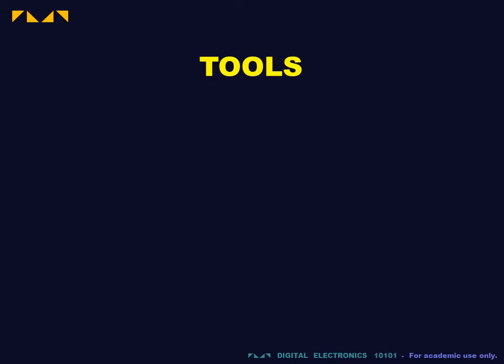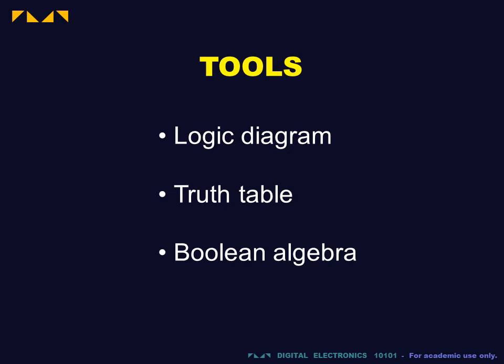There are three tools that we use to analyze combinational logic: the logic diagram, the truth table and Boolean algebra. We will demonstrate each of these using the two input AND operation.